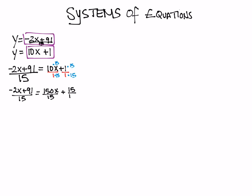This gives me minus 2x plus 91 over 15 equals 150x over 15 plus 15 over 15. I now cancel out the 15s. This leaves me with minus 2x plus 91 equals 150x plus 15.